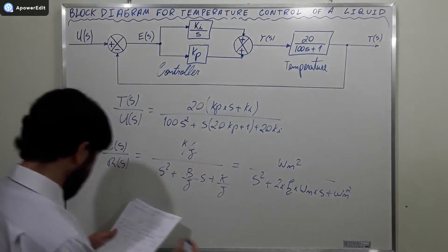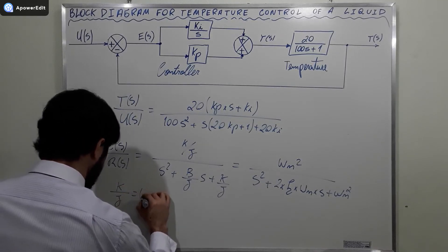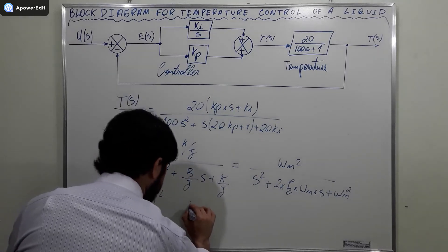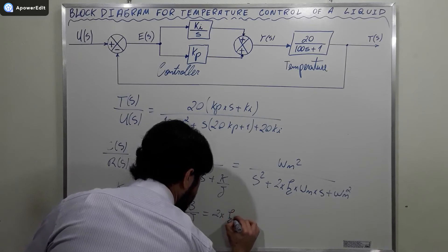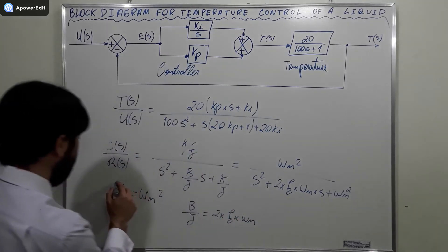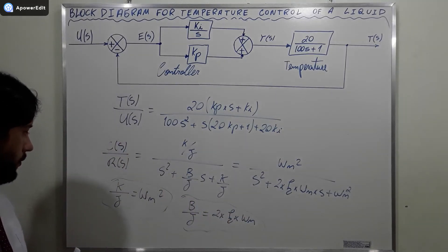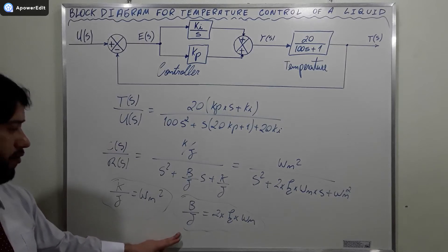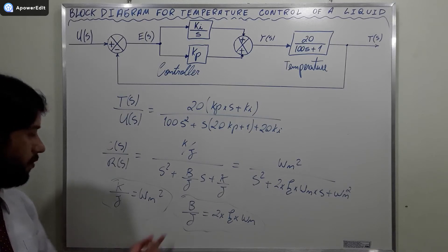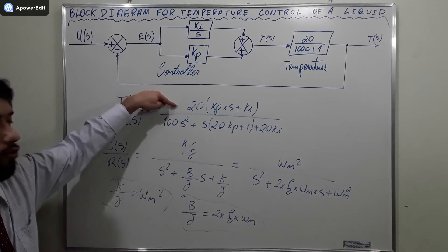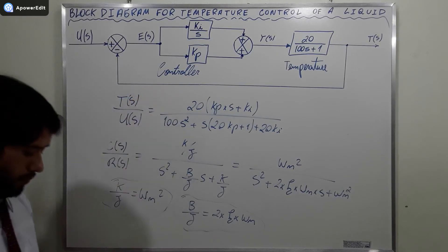Correcting the previous statement: K divided by J equals ωn squared, and B divided by J equals 2 times ζ times ωn. These are the relationships we are going to use, as advised by control engineering reference textbooks, to successfully work with our expression.